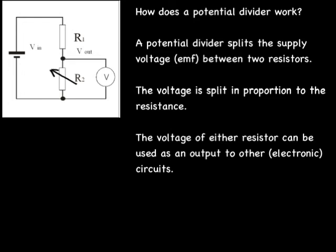If we were to replace the second resistor, R2, with a variable resistor, then it would be very easy to change the output voltage as required.